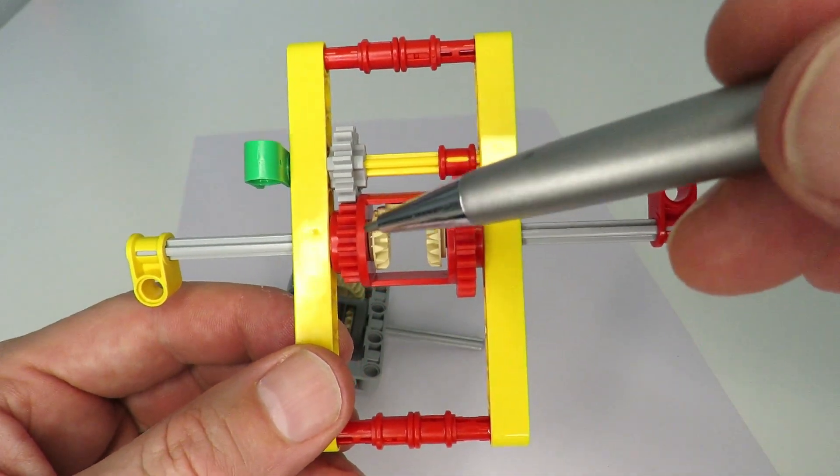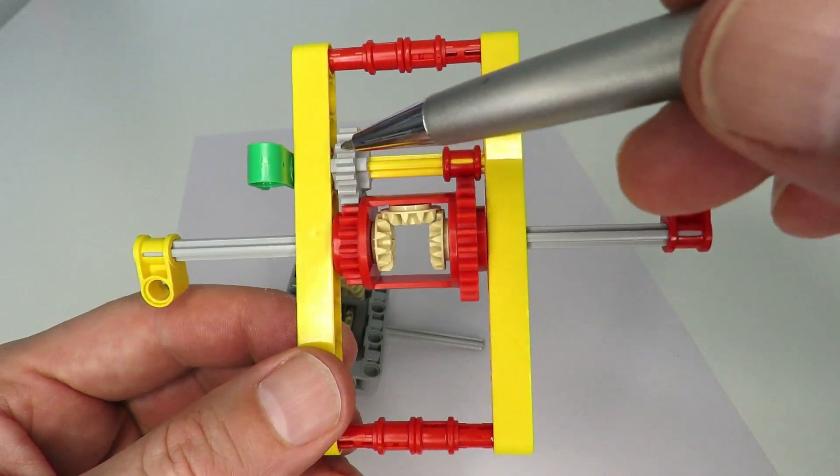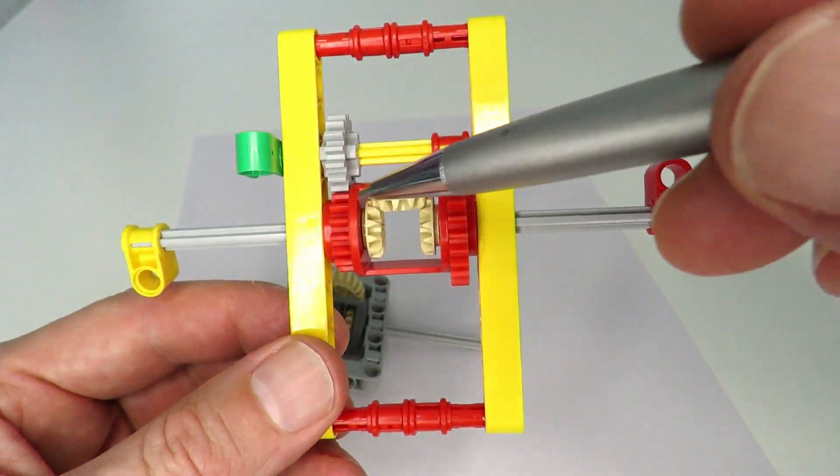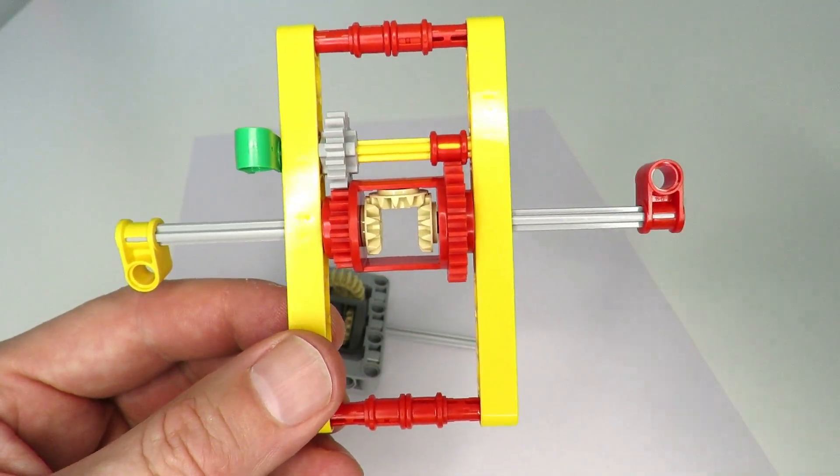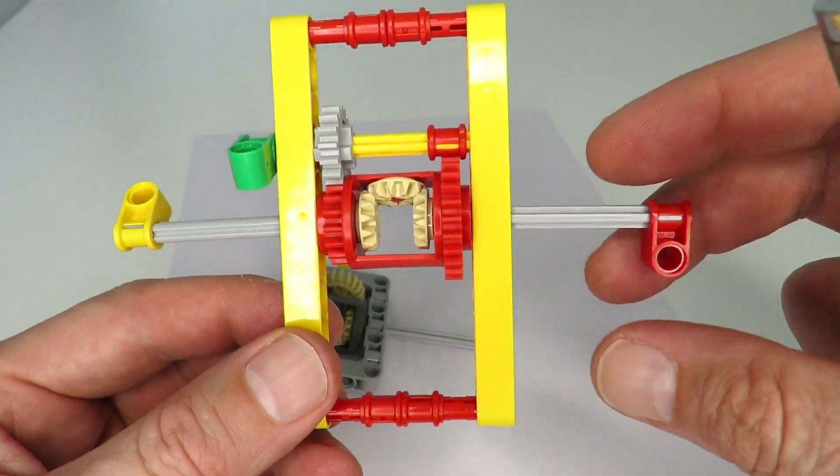On the right, there's a 24-tooth gear. What that means is by driving the 16-tooth gear onto another 16-tooth gear, the output ratio between the barrel and the axle is one to one, and that is very important.